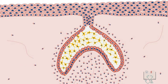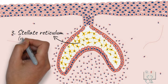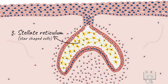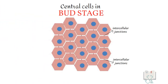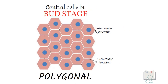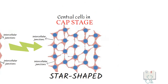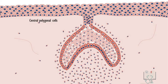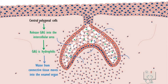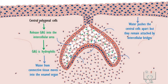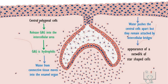The cells in the center between the inner and outer enamel epithelium are called stellate reticulum, which are star-shaped — sometimes also referred to as enamel pulp. The central cells in the bud stage are polygonal shaped, but in the cap stage they change to a star shape. This is because the cells in the center start releasing glycosaminoglycans into the surrounding ground substance. Glycosaminoglycans are hydrophilic and attract water from the surrounding connective tissue. This collection of water pushes the cells apart, but they remain attached to each other at points of intercellular junctions, giving an appearance of a network of star-shaped cells — hence called stellate reticulum.